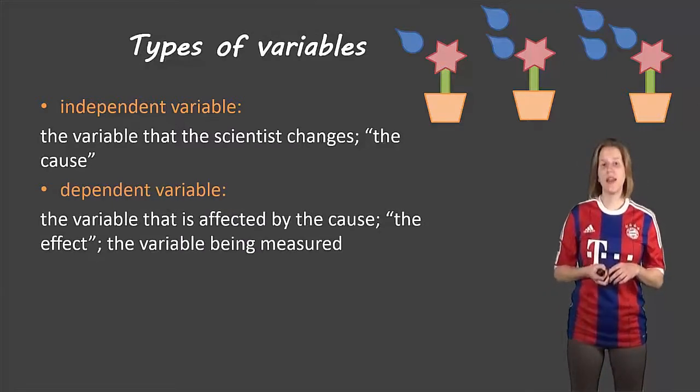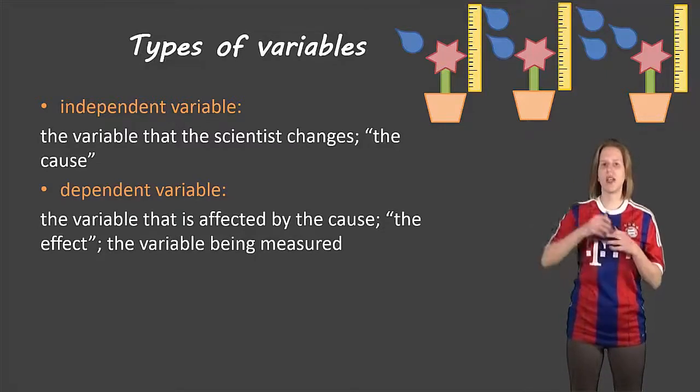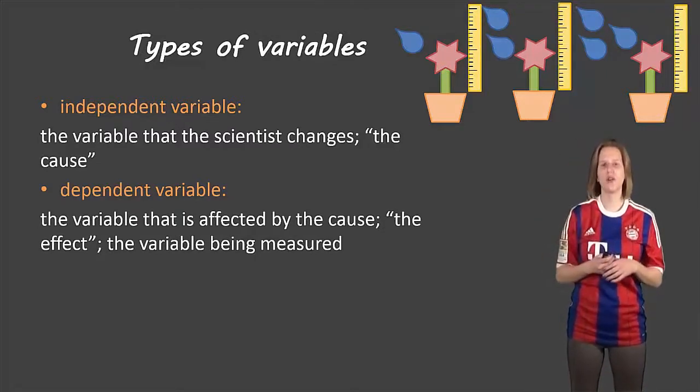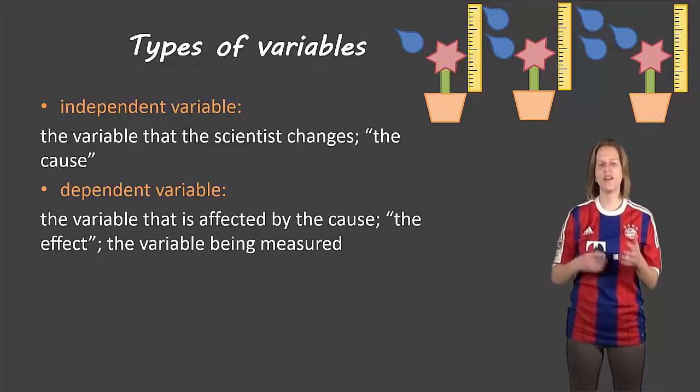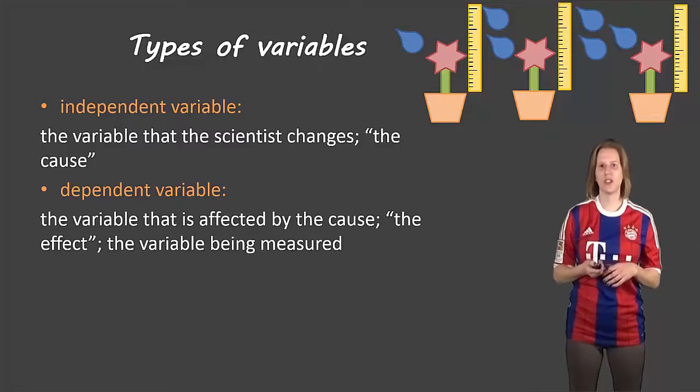The dependent variable is the thing that the scientist is measuring, or sometimes it's called the effect. So let's say this scientist is going to measure how tall those flowers grow based on the amount of water. Then the height is the dependent variable because that's what he's measuring.